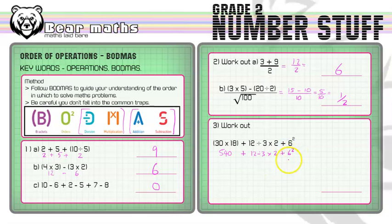Right now we need to do the 6 squared next according to this order of operation so I'm going to write down 540 plus 12 divided by 3 multiplied by 2 plus 36.